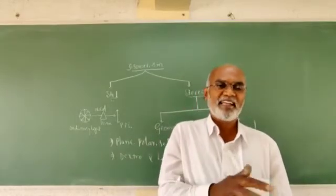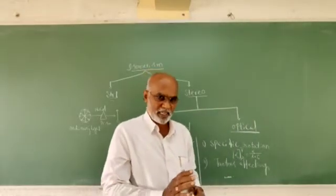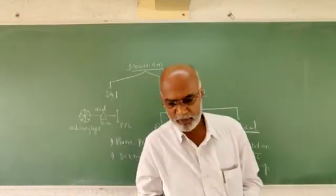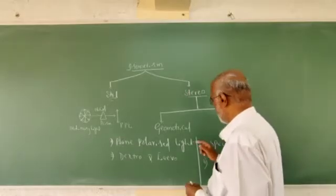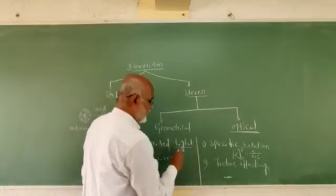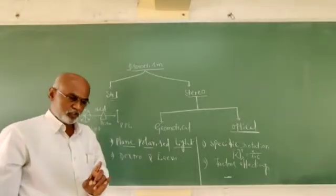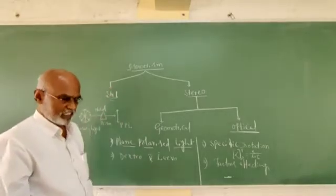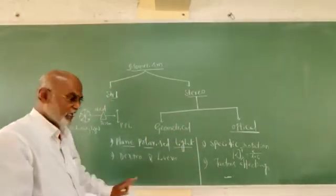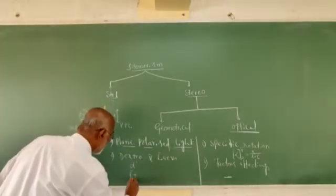To call a compound optically active, it should rotate the plane polarised light either in the clockwise or in the anticlockwise direction. Compounds that rotate the plane polarised light in opposite directions with all identical physical and chemical properties are called optical isomers. Any optical isomer which rotates the plane polarised light in the clockwise direction — towards the right — is called dextrorotatory, denoted by the letter 'd' and more commonly indicated by the sign plus (+).